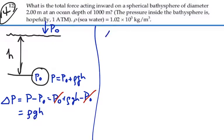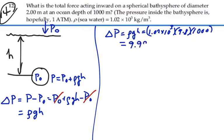So that change in pressure, which is rho g h, would be 1.02 times 10 to the 3 times 9.8 times 1,000 meters. And that is equal to 9.996, I'm going to keep all my digits here, times 10 to the 6 newtons per meter squared.